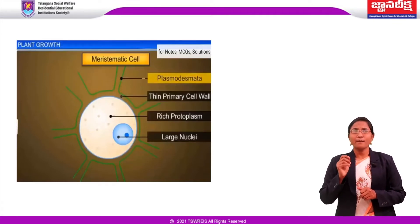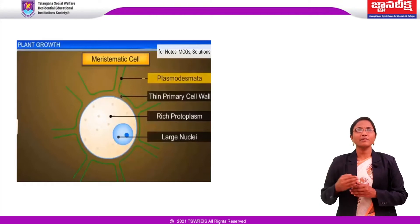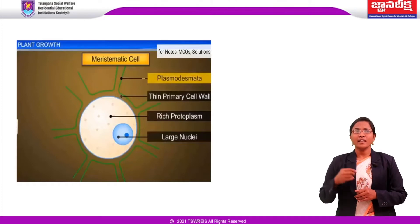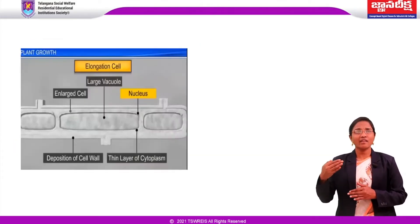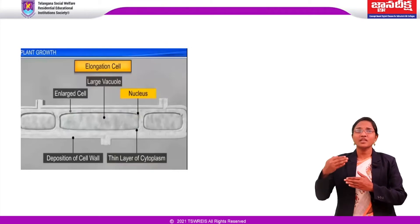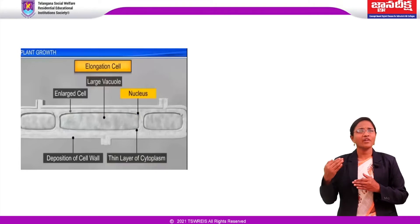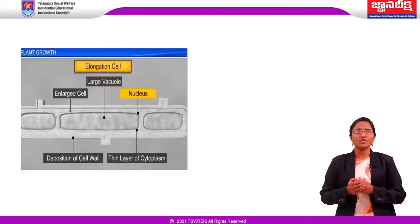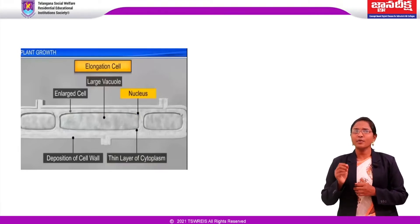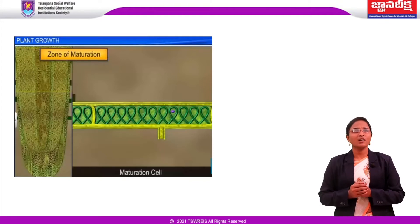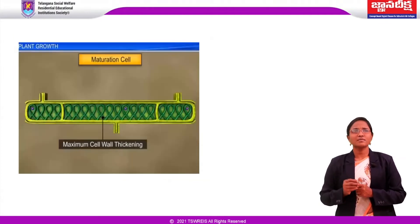The cells proximal — just next away from the tip — to the meristematic zone represent the phase of elongation. In this elongation phase, increased vacuolation, enlargement of cells and new cell wall depositions are observed. Further away from the apex, more proximal to the elongation zone, lies the phase of maturation. The cells of this maturation zone attain their maximal size in terms of wall thickening and protoplasmic modifications.